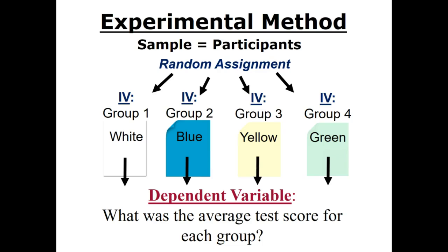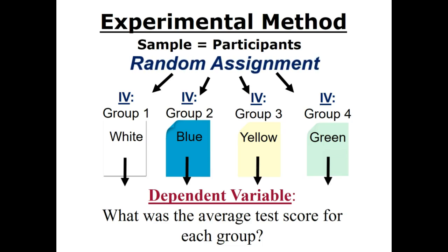One of the most important things to remember to correctly identify the independent variable versus the dependent variable is random assignment. The independent variable is an environmental event that can be altered by the researcher, allowing researchers to use random assignment to place participants into the different variations of that event. In the paper color example, the researchers controlled the color of the paper offered to students. They cannot randomly assign students to a test score — they are predicting that test score will be dependent on paper color. Specifically, they thought colors other than white would produce lower scores, but they did not find any difference between white paper and pastel colored paper.